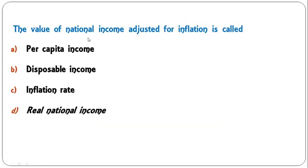Average income of the country is per capita income. National income divided by population gives you per capita income. So the first option is the correct answer.